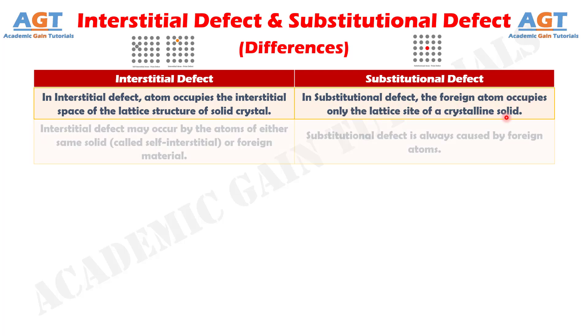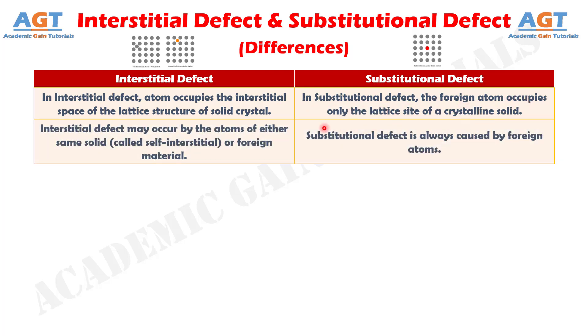Number 2. Interstitial defect may occur by the atoms of either the same solid, called self-interstitial, or foreign material, whereas substitutional defect is always caused by foreign atoms.